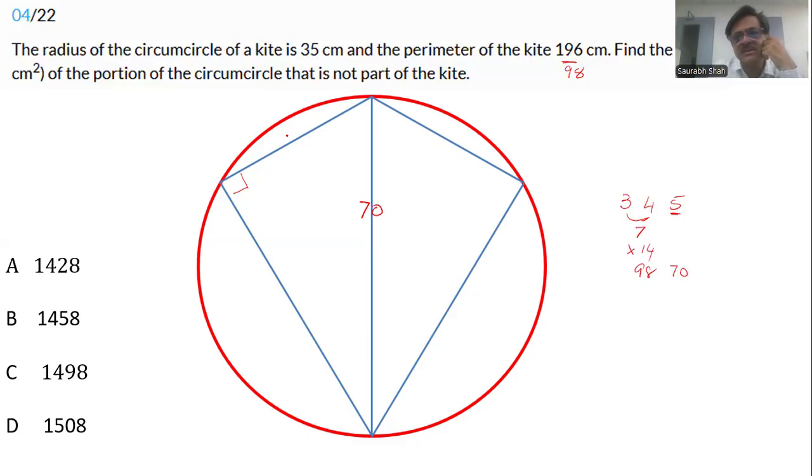98 divided by 7 is 14, and 14 times 5 gives you 70. So the sides of the triangle are 14 times 3 equals 42, 14 times 4 equals 56, and 14 times 5 equals 70. So we have understood our kite.